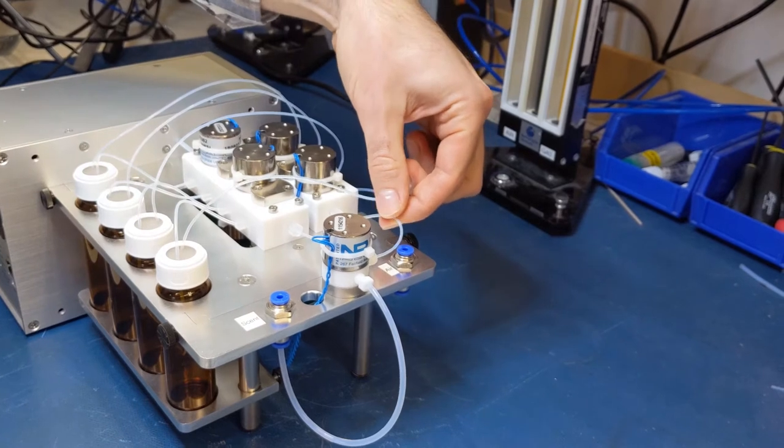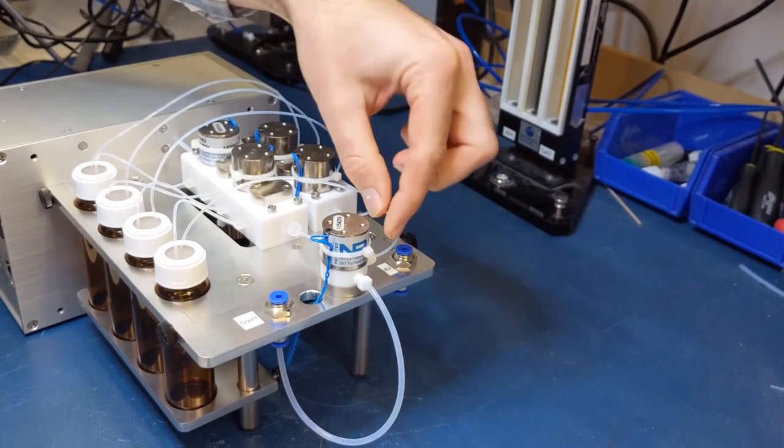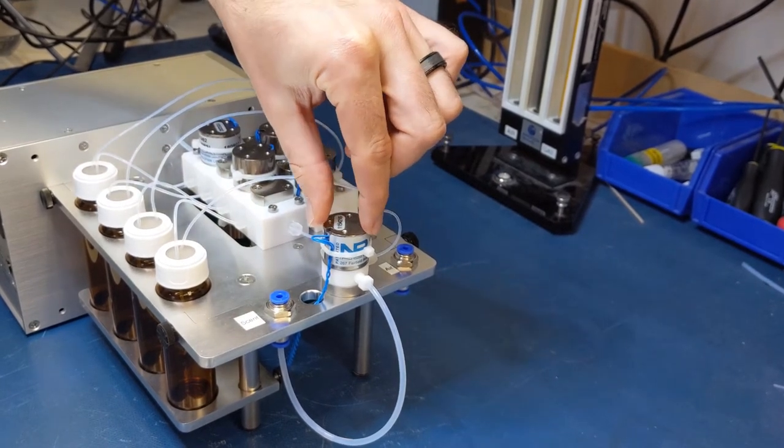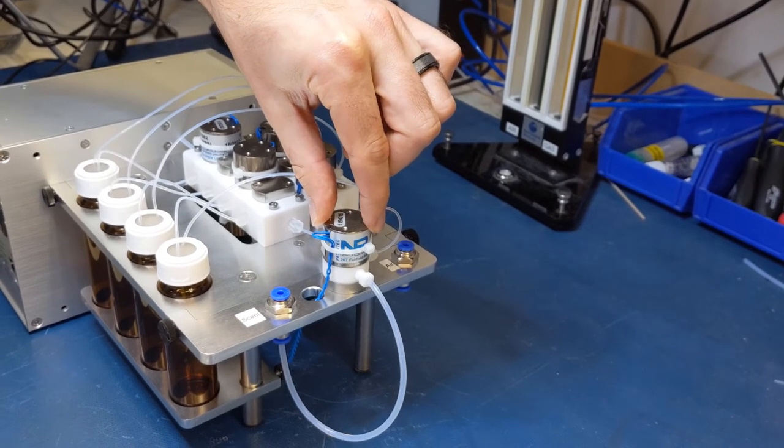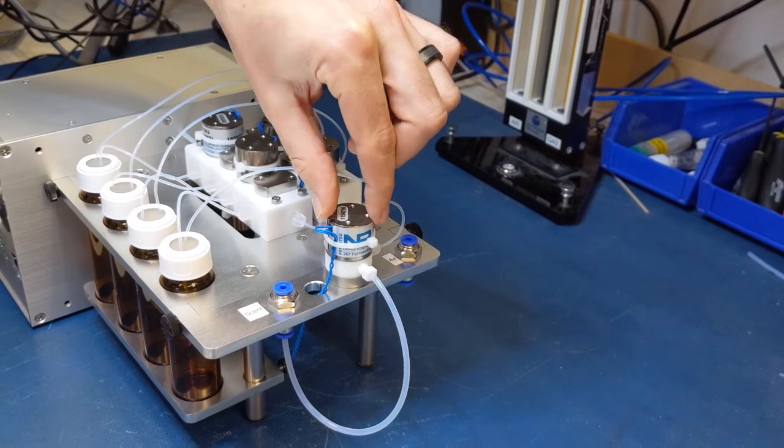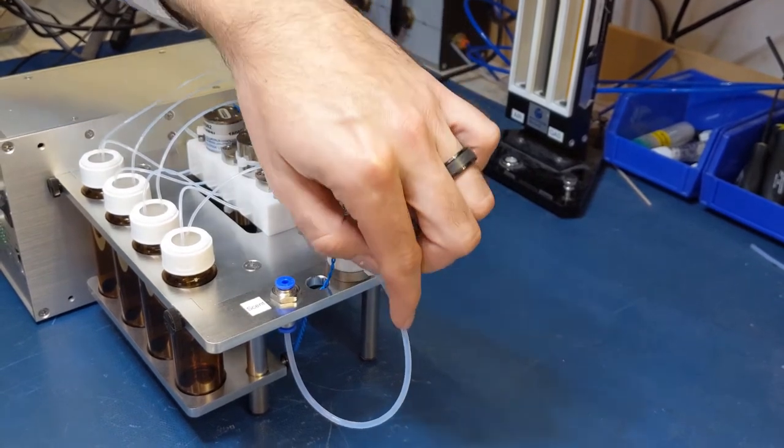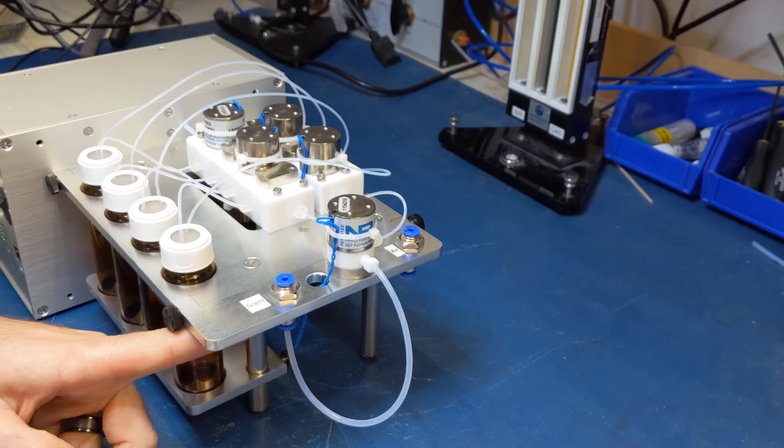The dilution and odor streams mix together as they flow to the mixing valve. When there, they create the desired concentration percentage following the odor stabilization delay. Once the stabilization delay is reached, the mixing valve opens, and odor flows to the scent port of the manifold.